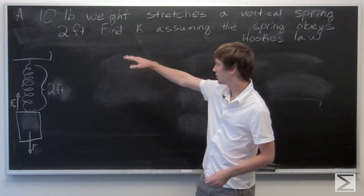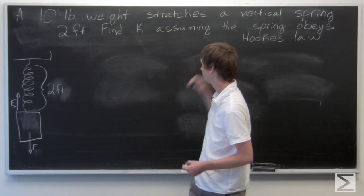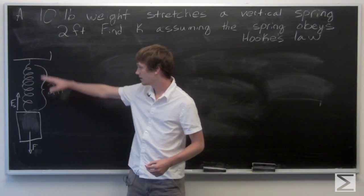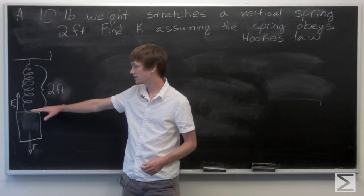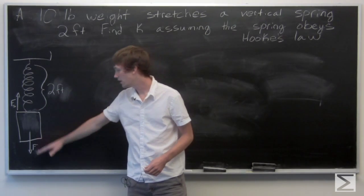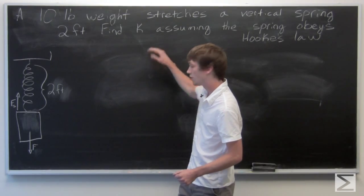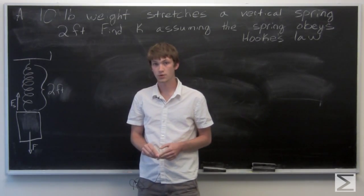In this problem we're told that a 10 pound weight stretches a vertically hung spring two feet. We can see that the spring is here and it's being stretched two feet with a 10 pound weight. So we want to find K assuming that the spring obeys Hooke's law.